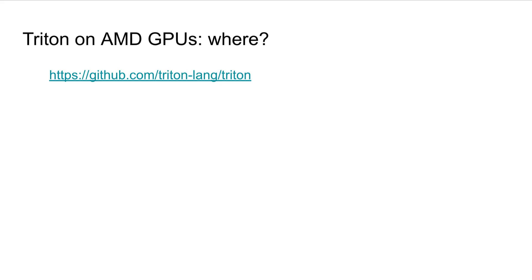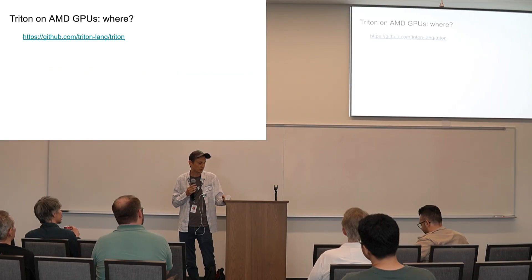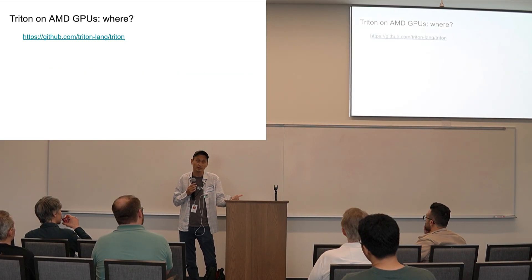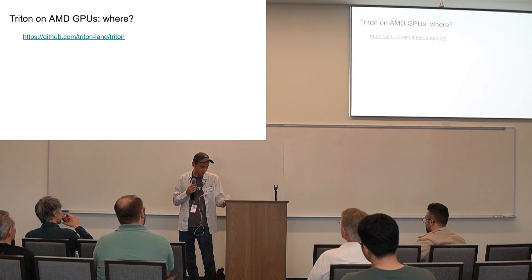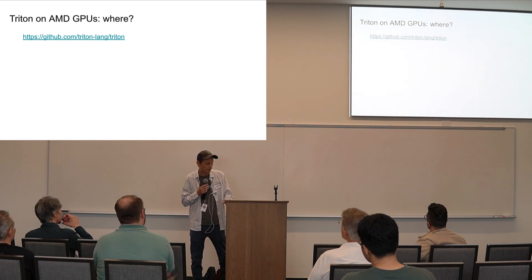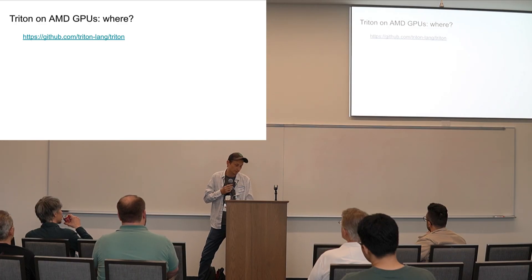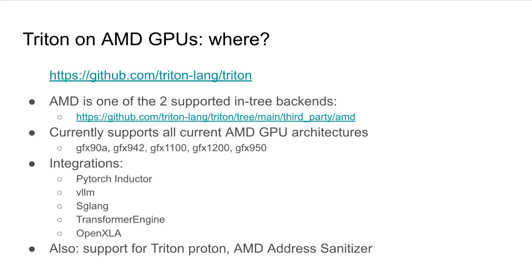How do you get Triton running with AMD GPUs? It's actually in the same place — it's upstream. You just pull down Triton from GitHub, build it, it auto-detects where you're running, and it's all baked in and working. No special enablement needed — we've already done the work. It's all upstream and fully merged in.